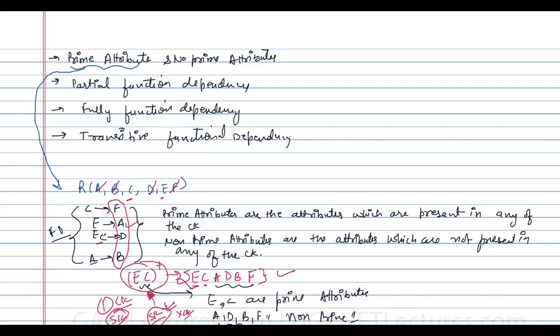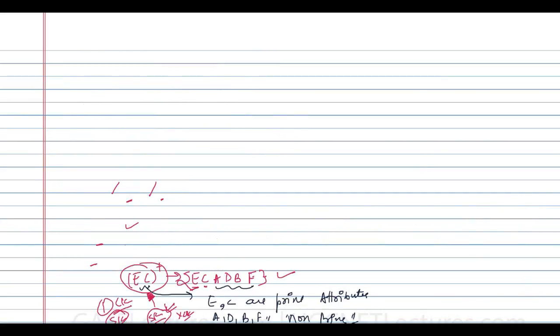Now that we understand prime and non-prime attributes, let's discuss partial functional dependency, fully functional dependency, and transitive functional dependency — partial, fully, and transitive.